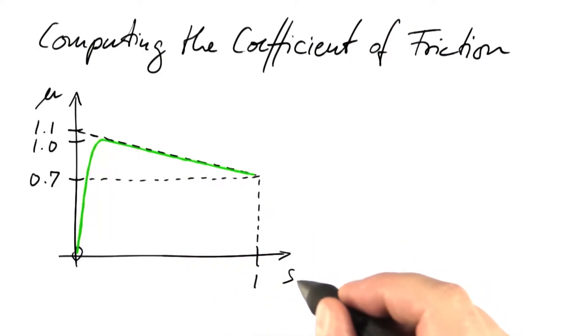This function that describes how the coefficient of friction depends on the wheel slip is a vital part of the simulation.